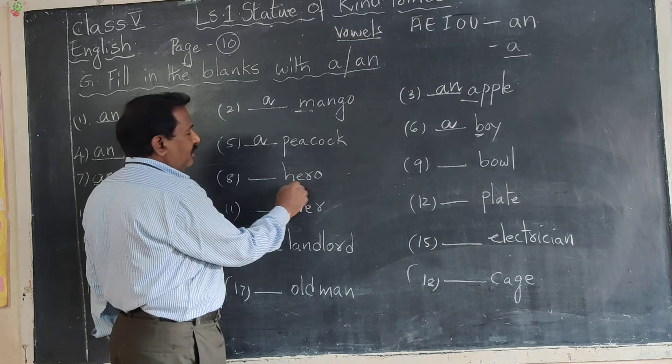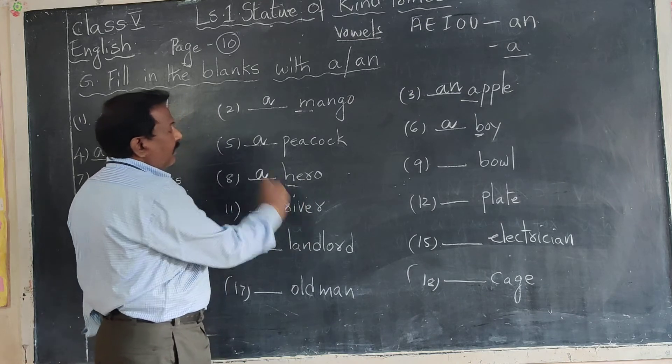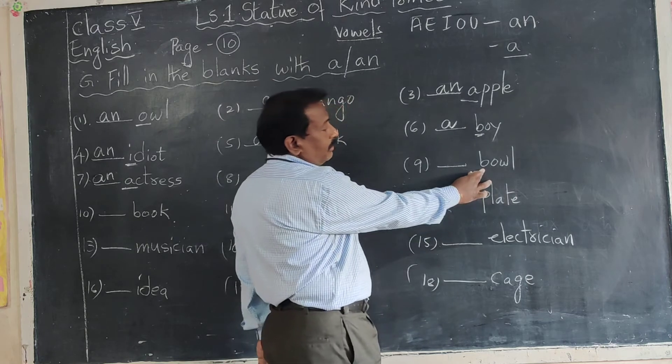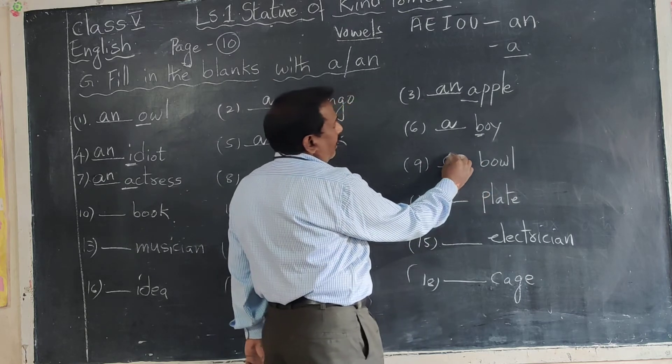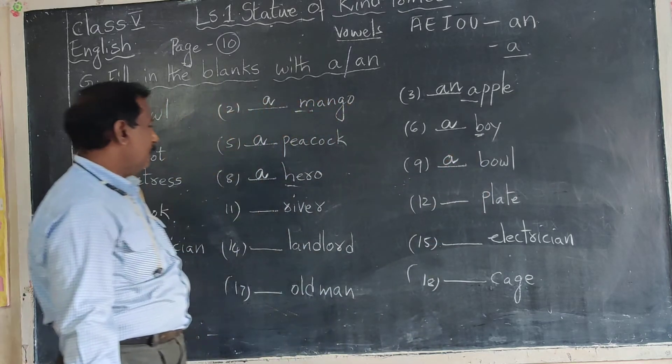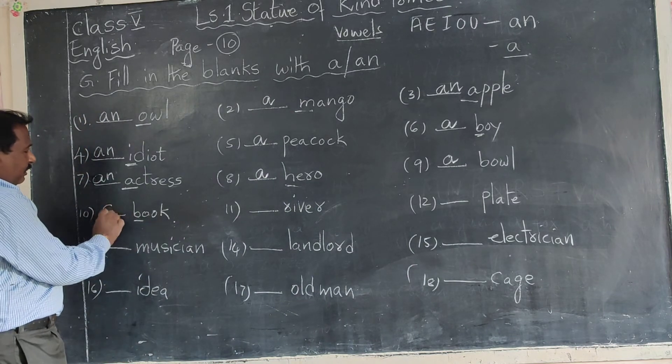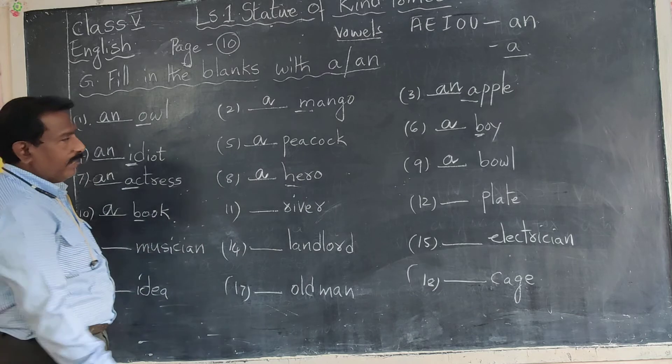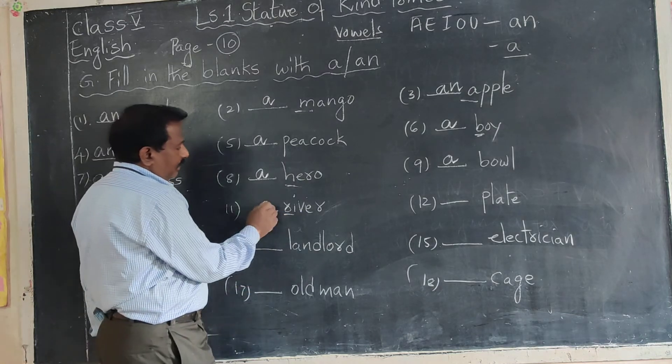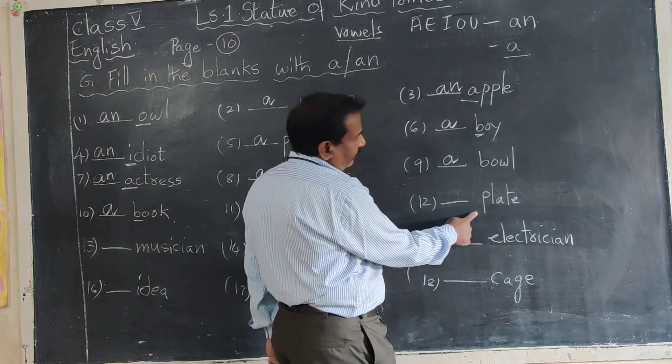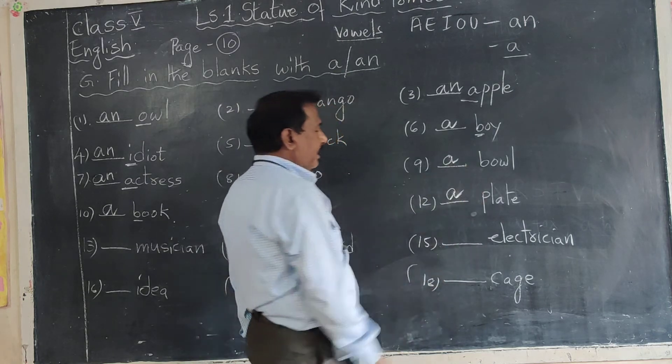Hero - H is consonant, we say a hero. Bow - B is consonant, we say a bow. Book - B is consonant, we say a book. River - R is consonant, we say a river. Plate - P is consonant, we say a plate.